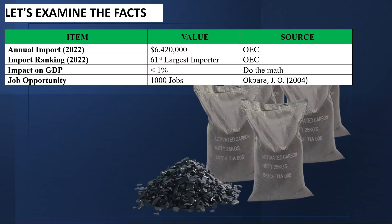According to the Observatory of Economic Complexity, in 2022, Nigeria imported activated carbon worth $6.42 million. Nigeria was the 61st largest importer of activated carbon. The impact to GDP is less than 1%. There is a thousand-plus job opportunity in this industry.